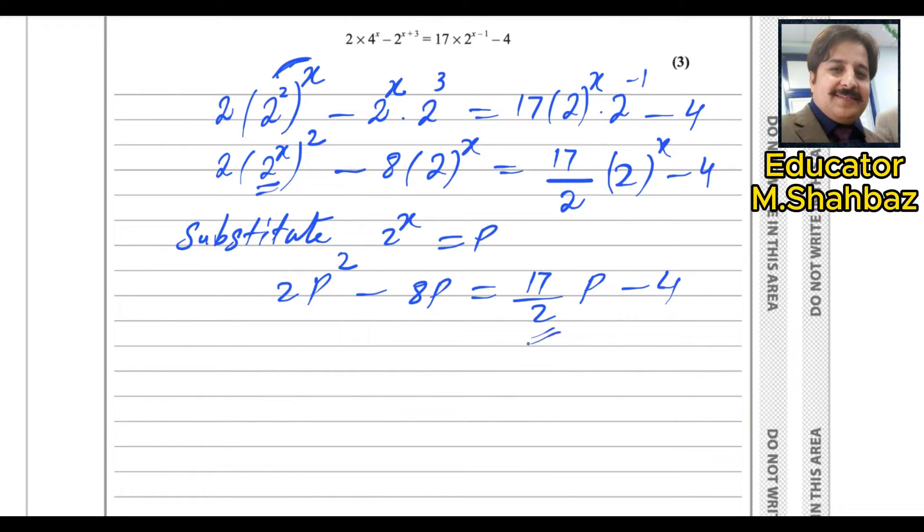To get rid of this 2, multiply by the same number, it is the rule, whenever you have a fraction, look at the denominator, the highest denominator, multiply by the same number. So you will get rid of denominator and the things will be very simple. So if you multiply every term with 2, you get the answer 4p square minus 16p equals 17p minus 8.